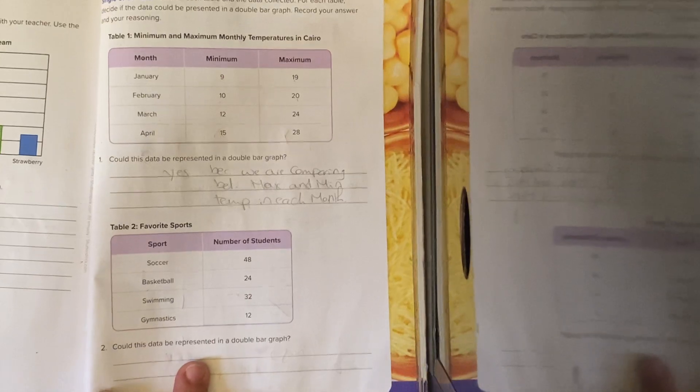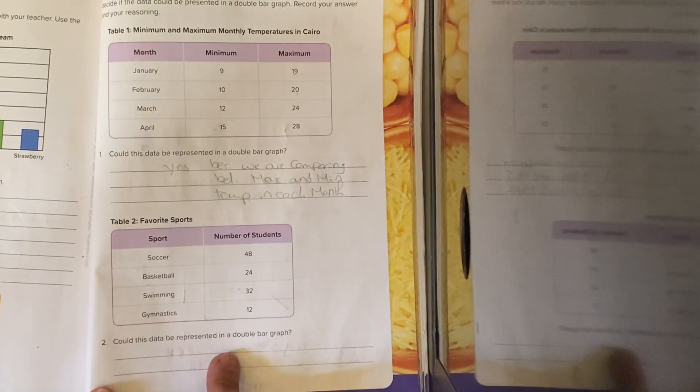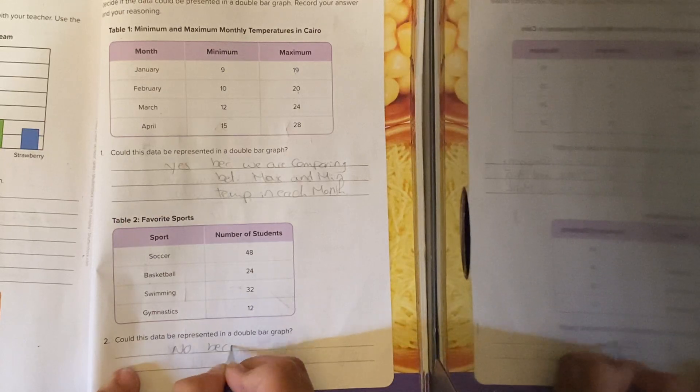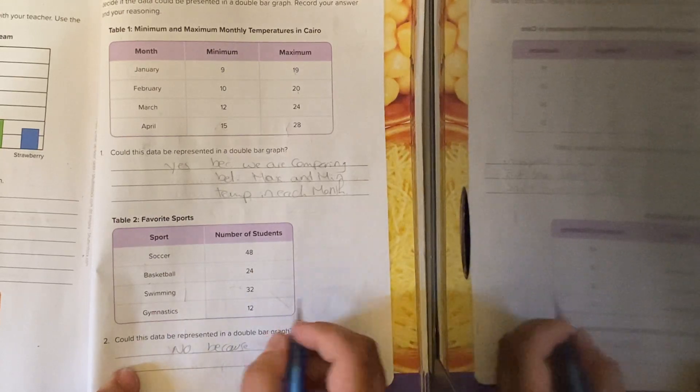Here, in this, could this data be represented in a double bar graph? The answer will be no, because we are not comparing between two sports.